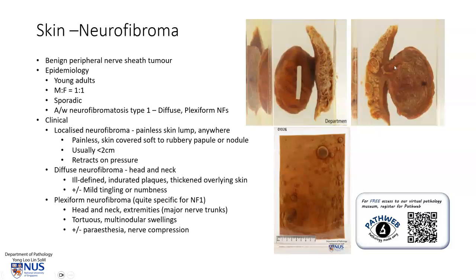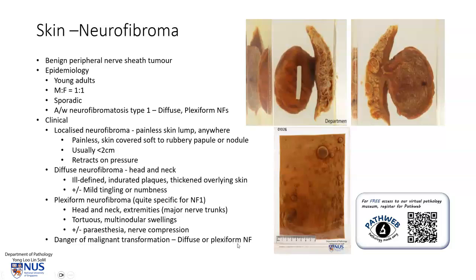This is an example of a neurofibroma that protrudes from the skin, forming a nodule below the epidermis. Here is another example showing multiple neurofibromas arising from the skin. There is a danger of malignant transformation in the diffuse or plexiform neurofibroma; danger signs would be progressive enlargement or rapid enlargement after many years of staying the same size.